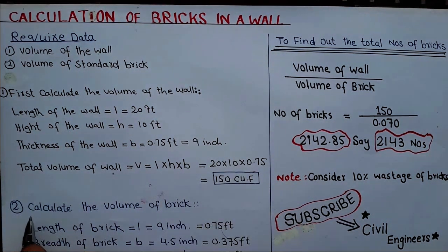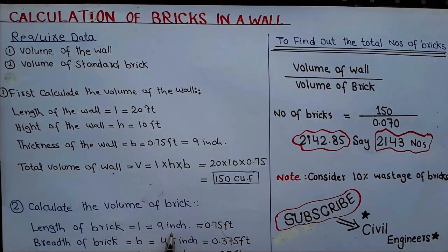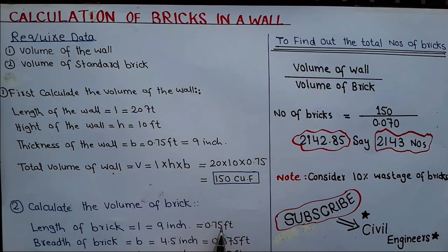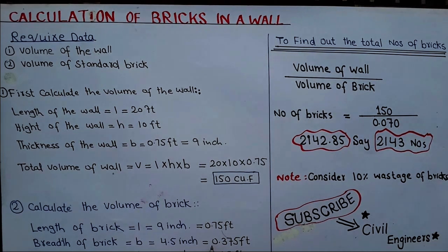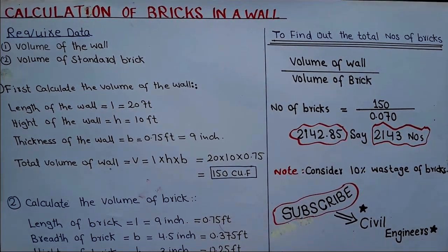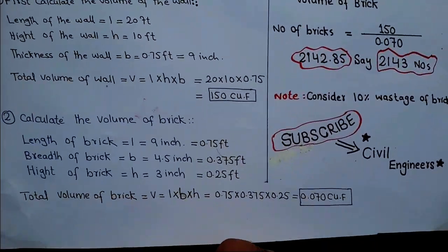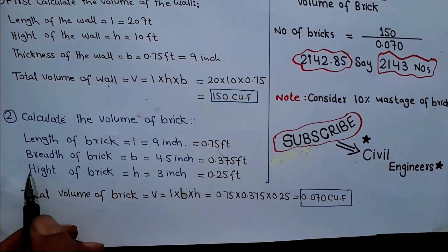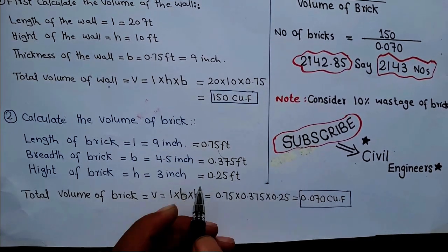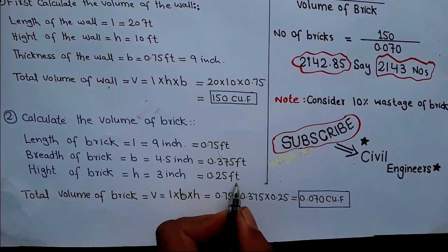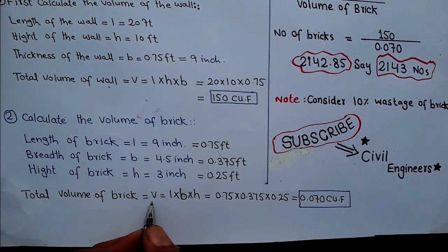Now the second step: calculate the volume of the brick. The length of the brick is 9 inches, which is equal to 0.75 feet. The breadth of the brick is 4.5 inches, which is equal to 0.375 feet. The height of the brick is 3 inches, which is equal to 0.25 feet.